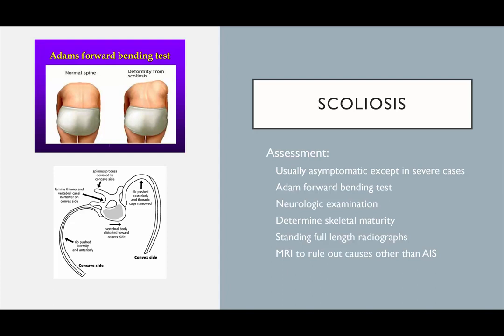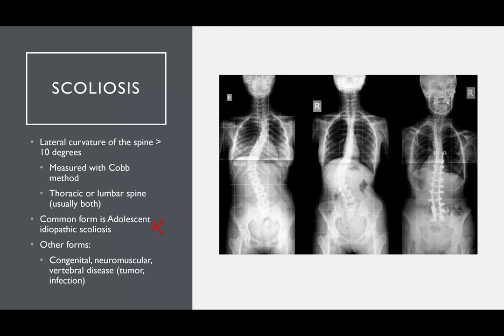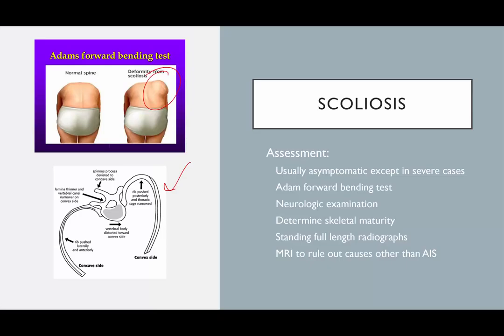On the forward bending test — one of the screening tests — the deformity becomes more apparent. You can see the so-called rib hump due to the curvature and rotation of the spine; because it's in the thoracic spine, the rib cage gets deformed as well. You perform a neurologic examination, determine skeletal maturity, and get full-length standing radiographs. MRI is often obtained to rule out other causes.